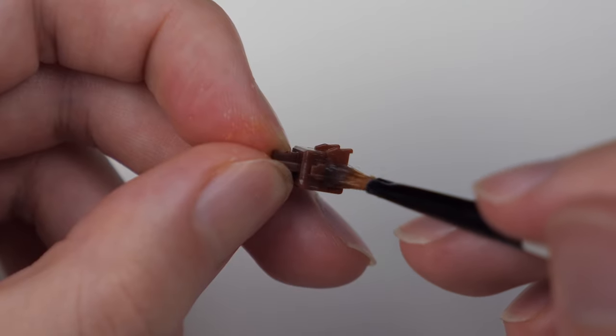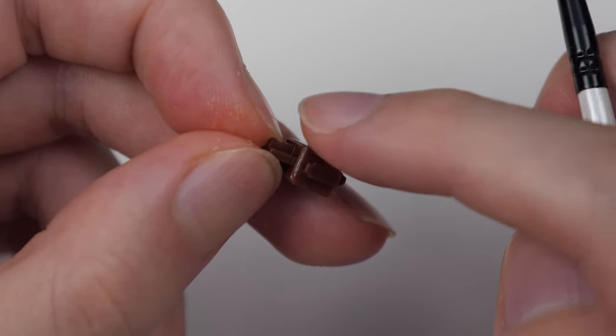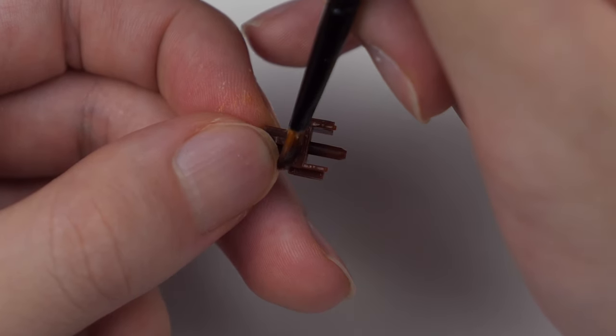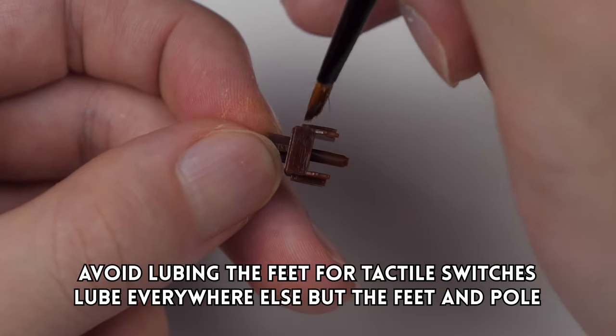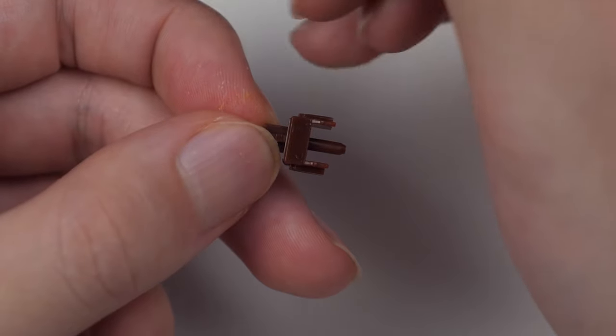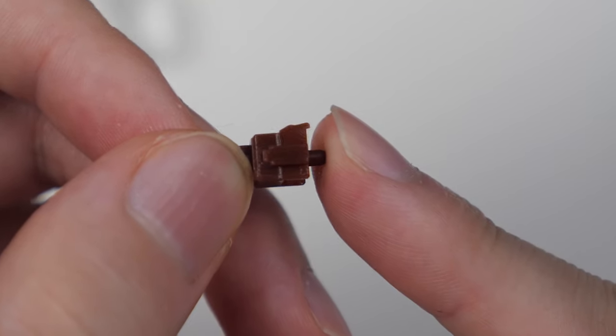If you're lubing your tactile switches, do not lube the feet here. The tactility comes from the resistance of the feet rubbing on the contacts, so unless you have extremely tactile switches such as box navies, do not lube the feet. Lubing the feet will drastically reduce your tactility, and if you have light tactile switches like Gateron Browns, it'll basically turn them into linear switches.